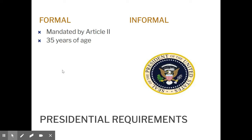You have to be at least 35 years of age. You must be a natural born citizen, meaning you have to be born in the United States. This is the only government position that requires natural born citizenship. To be a member of Congress, for example, you can be born in a foreign country, become a U.S. citizen, and still be elected — but that's not a possibility for president. You have to be a natural born citizen.